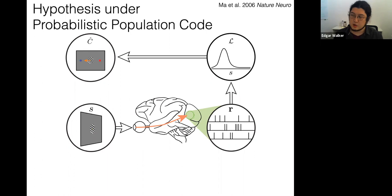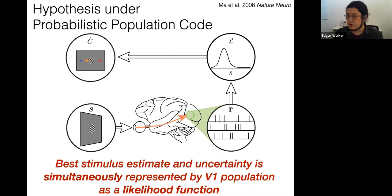We can formalize this by computing a likelihood function from the population response — the probability of the observed neuronal population pattern given a hypothesis value of the stimulus. At high contrast (low sensory uncertainty), the decoded likelihood function tends to be narrow and centered close to the actual stimulus orientation. At lower contrast (high sensory uncertainty), the decoded likelihood function tends to be wider with its peak location more deviated from the true stimulus value. Therefore, the likelihood function captures both the best stimulus estimate through the peak location and associated uncertainty through the shape — the more uncertainty, the wider the likelihood function.